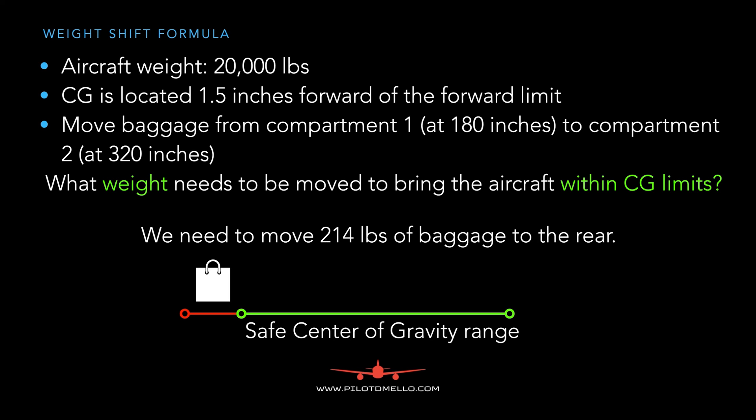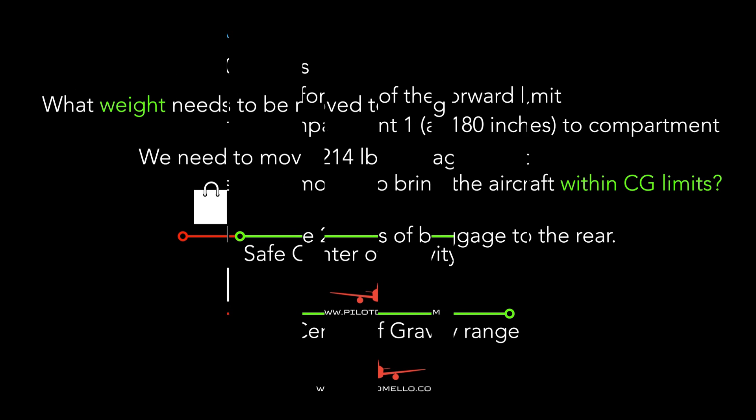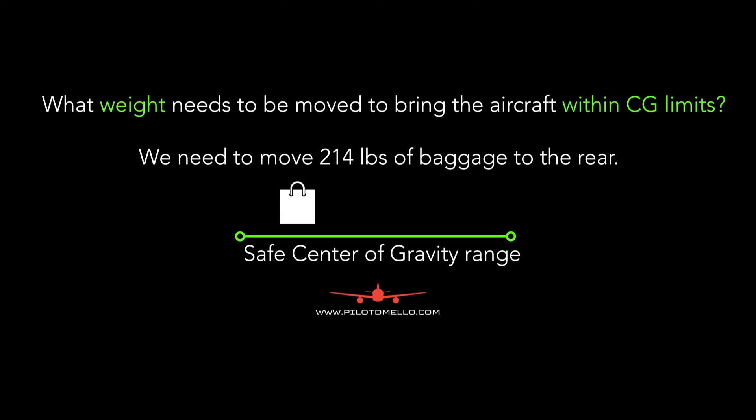So once again, the original question: what weight needs to be moved to bring the aircraft within center of gravity limits? We need to move 214 pounds of baggage to the rear. Imagine this is your baggage that's too far forward — we move it to the back, and now we're again within the safe center of gravity range.